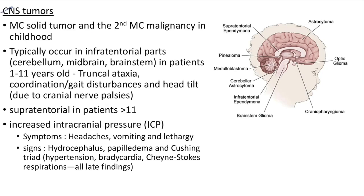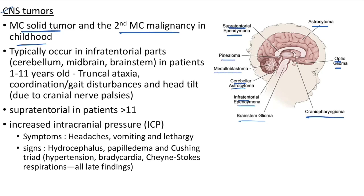ALL case: 4-year-old presents with bone pain (extramedullary hematopoiesis), arthralgia, and lethargy. Physical examination reveals pallor, ecchymosis, and fever. Labs show anemia and thrombocytopenia. CNS tumors: most common solid tumors and the second most common malignancy in childhood. Pediatric CNS tumors include craniopharyngioma, optic glioma, astrocytoma, brainstem glioma, infratentorial ependymoma, cerebellar astrocytoma, medulloblastoma, pinealoma, and supratentorial ependymoma.